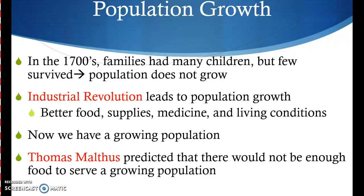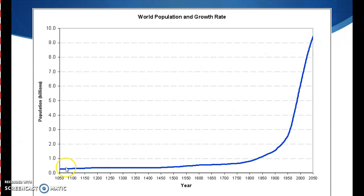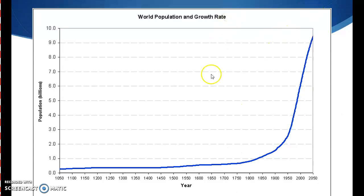So if you look at this chart, you can see population growth throughout history. If you start from the year 1000, overall the population growth is incredibly low, until you get to the Industrial Revolution. From the 1800s to the 1900s, you see a big spike, and from the 1900s on, we see a huge spike. The Industrial Revolution has a huge effect on the increase of population in the world.